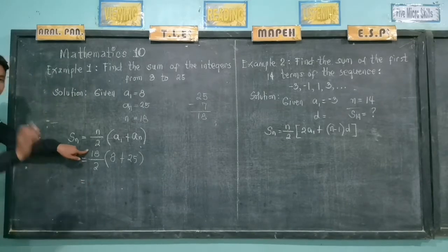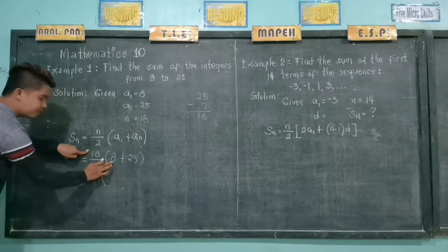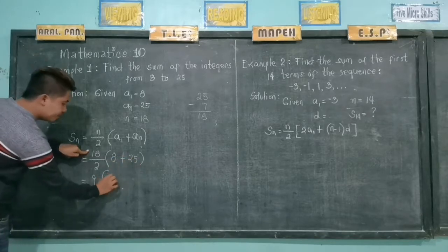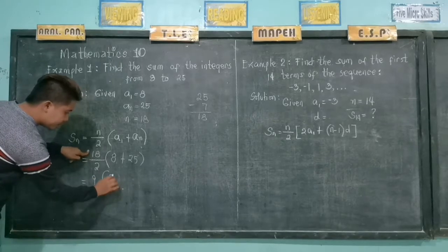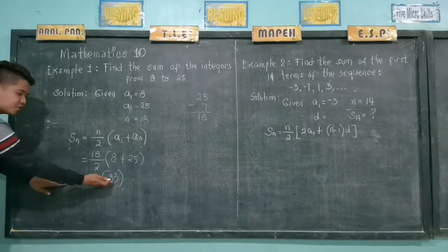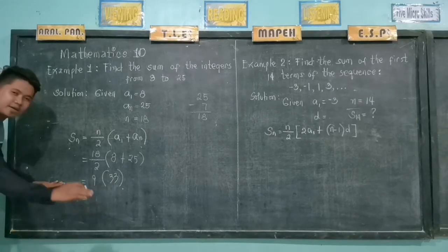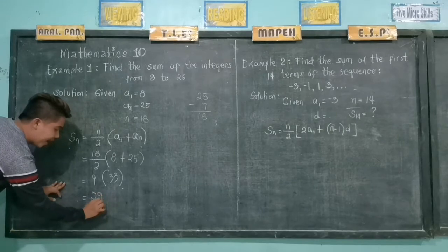So now, 18 divided by 2, we have 9. And then, the sum of 8 and 25 is 33. And 9 times 33, we have 297.